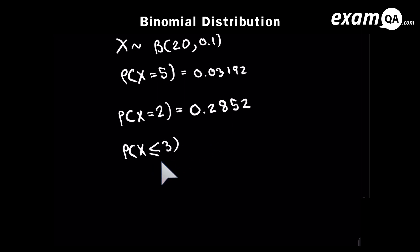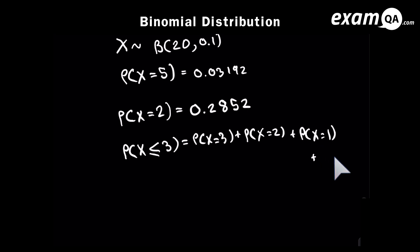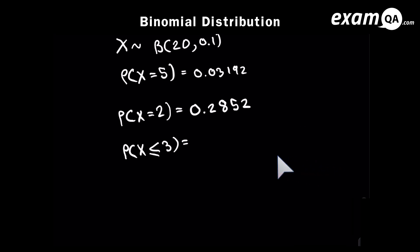This question is slightly different — it says probability of X less than or equal to 3. You could do probability of X equals 3, plus X equals 2, plus X equals 1, plus X equals 0, but that would be really long. Instead, you're going to use binomial CD, which works all of that out in one go. Choose binomial CD, enter N as 20, P as 0.1, and X as 3. You should get 0.867.